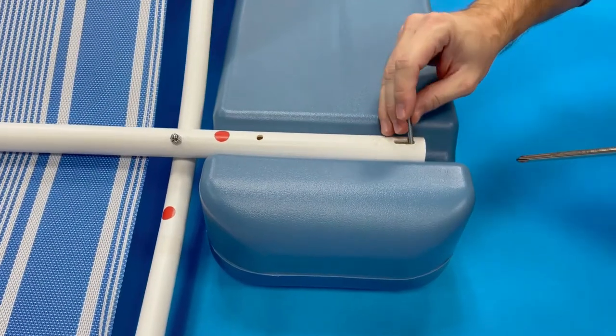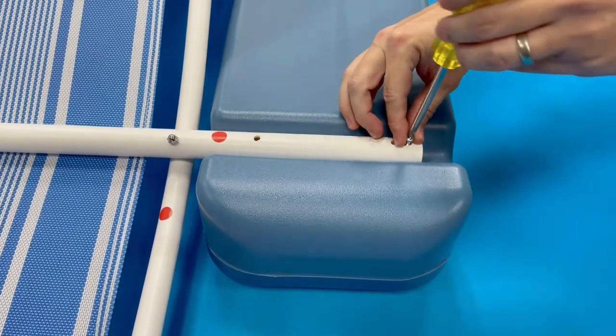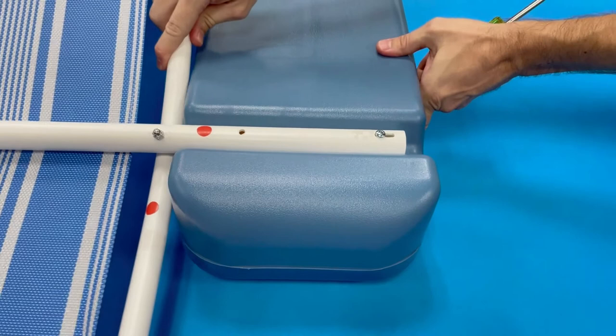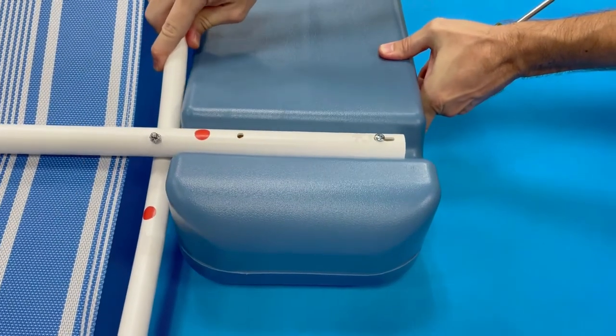Insert bolts into the four holes on the outside of the crossbars. Do not tighten until all bolts are in place. This allows you to better align the bolts and adjust the alignment.